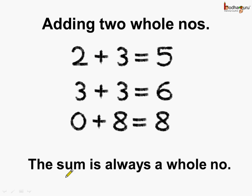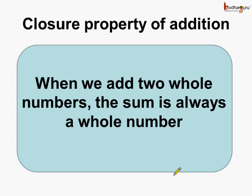The sum of two whole numbers is always a whole number. So remember children, whenever we add two whole numbers, the sum is always a whole number. And this is called the closure property of addition. We can say the whole numbers have closure under addition.